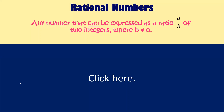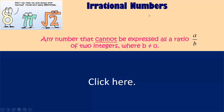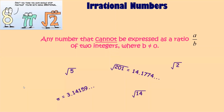Rational numbers: any number that can be expressed as a ratio of A over B of two integers, where B does not equal zero. Irrational numbers: any number that cannot be expressed as a ratio of A over B of two integers, where B does not equal zero.